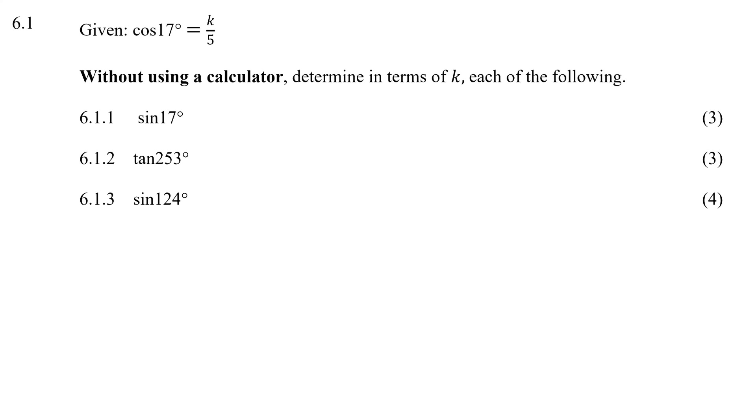Given that cos 17° equals k over 5, without using a calculator, determine in terms of k each of the following.